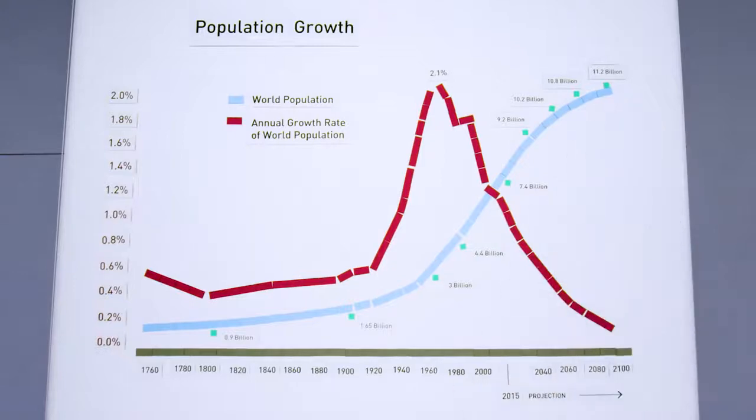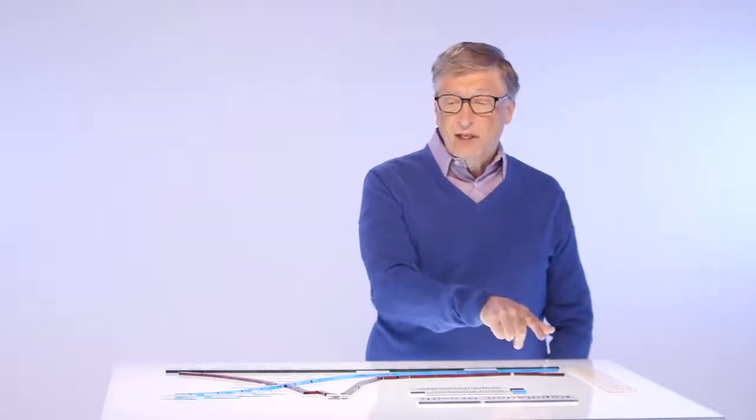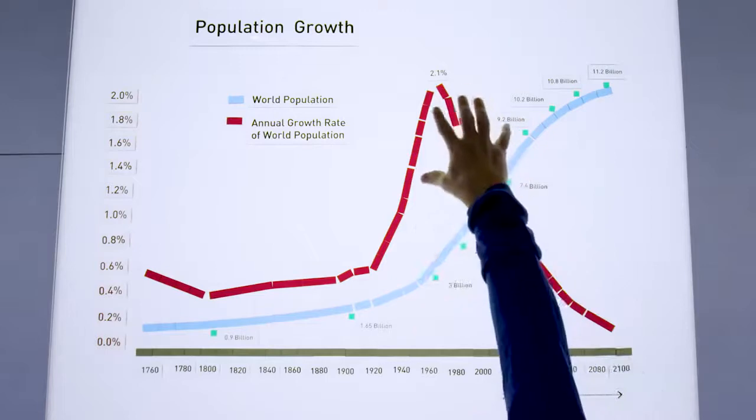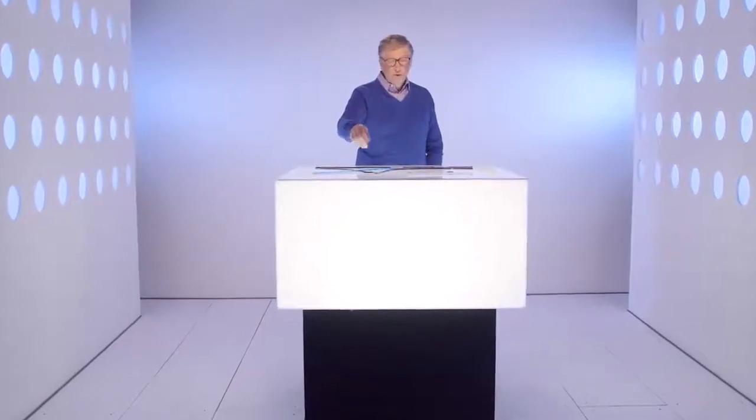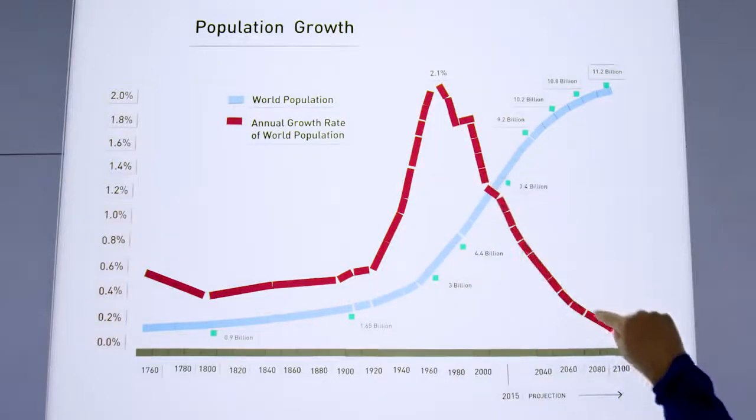Another way to see that is through this rate of population growth. You can see that in the 60s, that reached a pretty high number, over 2% per year. And it's now come way down.